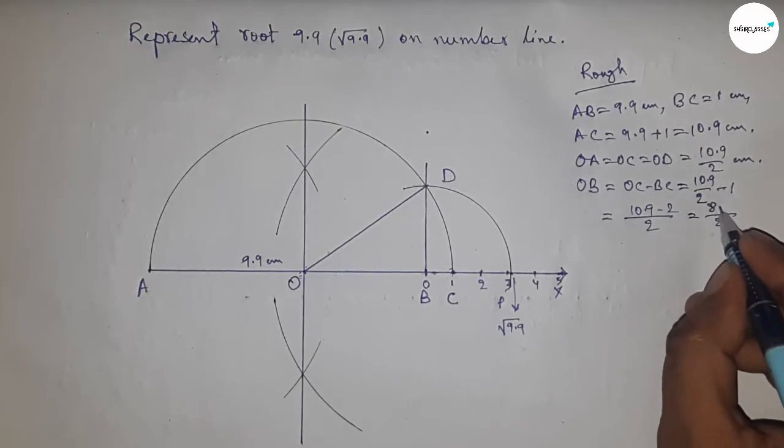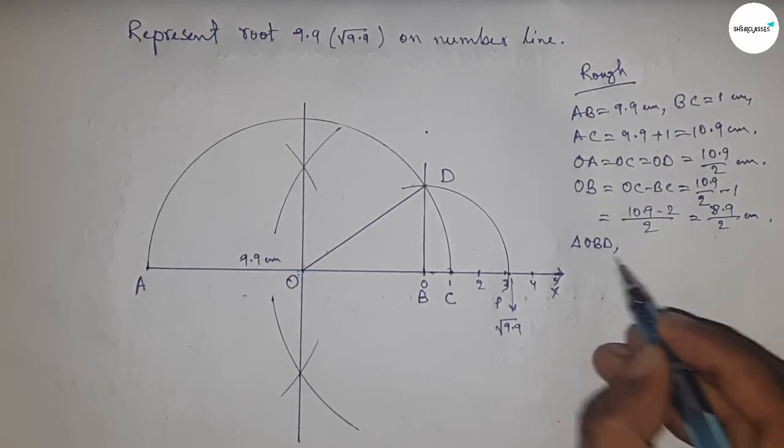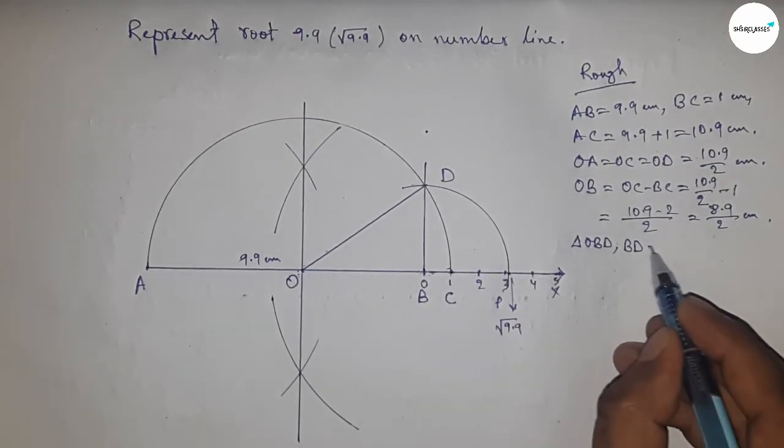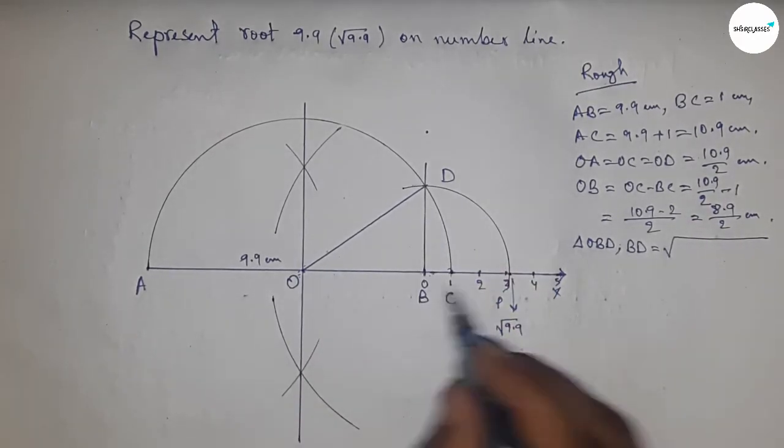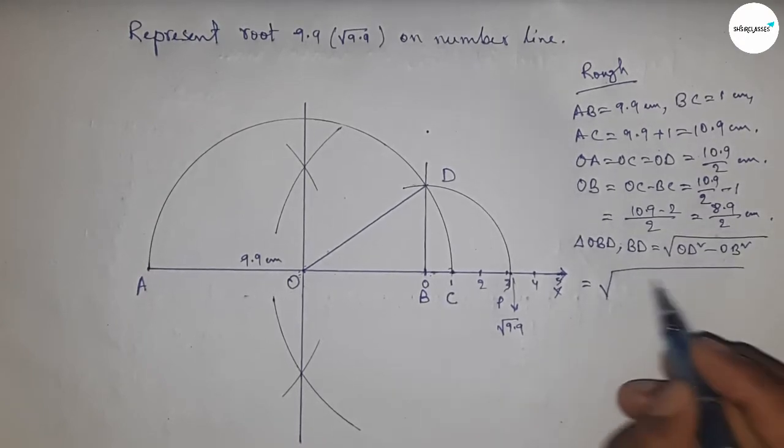Now from right angle triangle OBD, we can write BD equal to root over OD square minus OB square by Pythagoras theorem, hypotenuse square minus base square. Now putting the value of OD and OB.